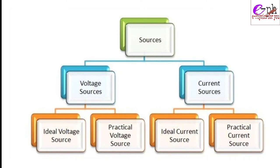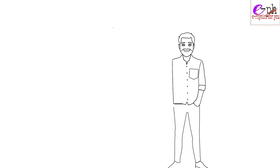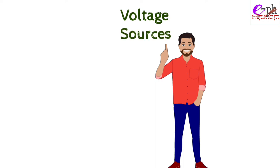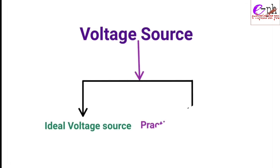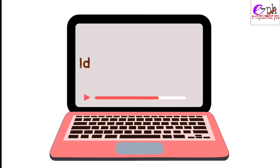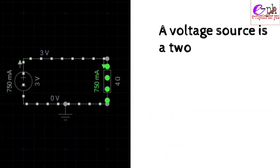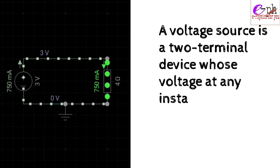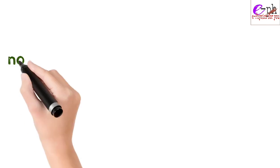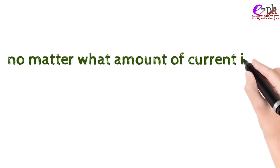The current source and voltage source are further categorized as ideal sources and practical sources. In this video, we will only discuss voltage sources. Voltage sources are divided into two categories: the first is an ideal voltage source and the other is a practical voltage source. A voltage source is a two-terminal device whose voltage at any instant of time is constant.